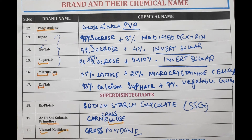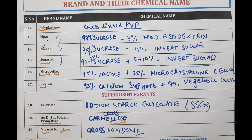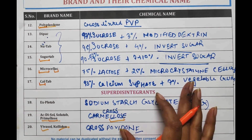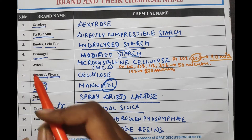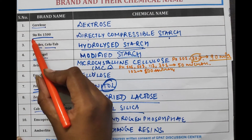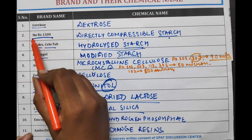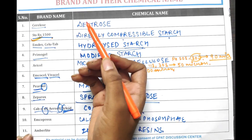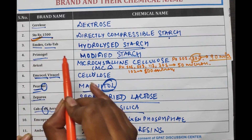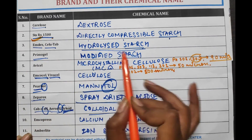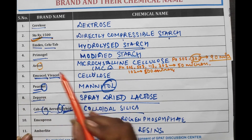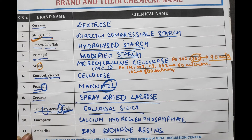Now let's recap previously discussed brand names and their chemical names. Starex — 'star' means starch. Primogel — Modified Starch. Avicel — 'cell' means cellulose, specifically MCC.